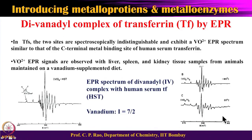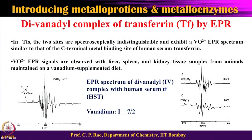This EPR approach also works in real biological samples such as liver, spleen, kidney, and other tissues from animal models. At room temperature the spectra are less resolved, but at lower temperatures very well-resolved EPR spectra are obtained, confirming the presence of V4+ species in biological systems.